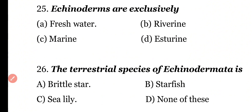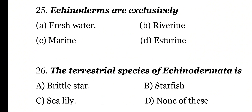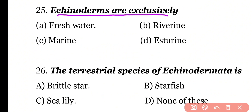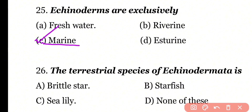Question 25: Echinoderms are exclusively freshwater animals, riverine animals, marine animals, or estuarine animals? Correct answer is Option C. Echinoderms are exclusively marine animals.